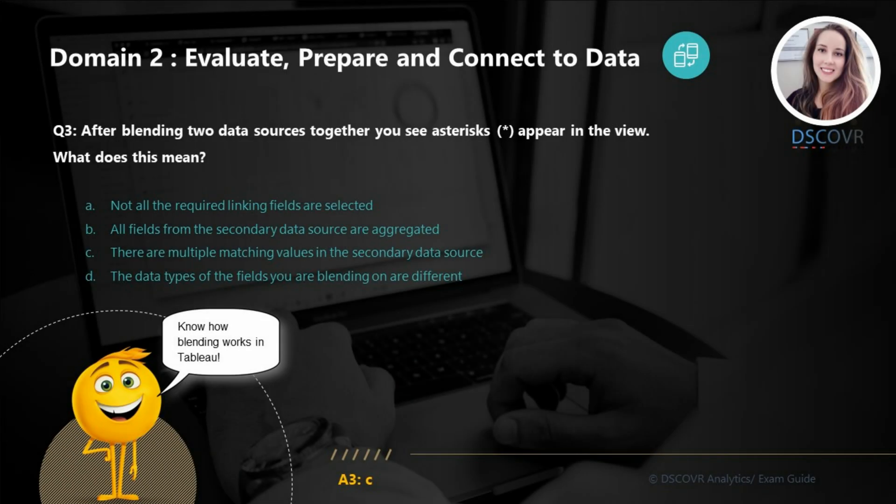For question number three, let's say you're blending two data sources together, and after blending them you see asterisks appear in the view. What does this mean? It typically means that you have multiple matching values in your secondary data source. You need to make sure that there's only one matching value in the secondary data source for each mark in the primary data source.